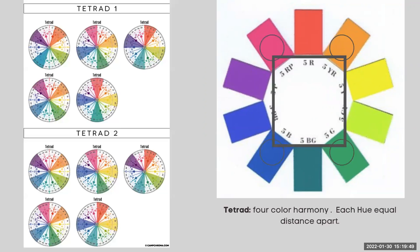A tetrad is a four-color harmony — hues that are equal distance apart. Again, using the Munsell color wheel, you want to calculate hues that are equal distance apart.